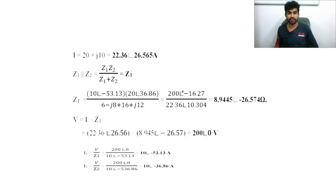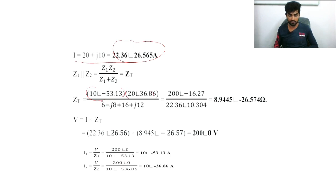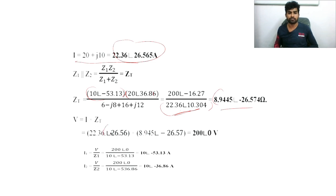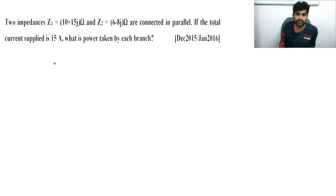Cross-checking Problem 3: I = (20 + j10) converted to polar, Z_equivalent = Z1×Z2/(Z1+Z2). Note: be careful not to mix angle notation — if angle is specified, write it consistently. Z_total = 8.944 ∠ −26.57°. V = I × Z_eq gives 200 ∠ 0°. Then I1 and I2 are calculated as shown.